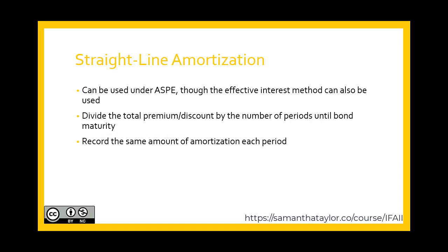The previous example used the effective interest rate method of amortizing the bond discount or premium. That is what is required under IFRS. Under ASPE, you have a choice: you can either use the same method as IFRS — the effective interest rate amortization — or you can choose to use the straight-line amortization. The straight-line method is exactly what you would picture: you take the total amount to be amortized divided by the time period in which to amortize it, and then you amortize it in equal installments over the remaining life.